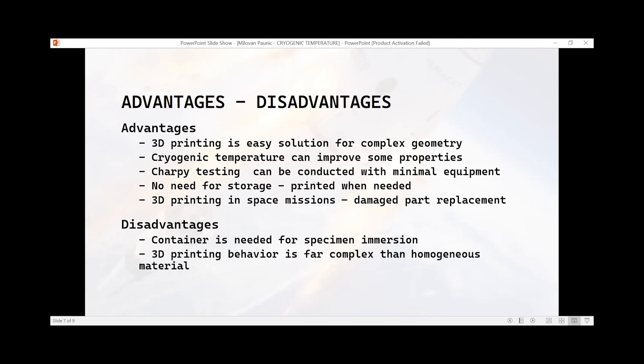3D printing behavior is far more complex than homogeneous material like metal. Filament and 3D printer manufacturer can have impact on results, because small imperfections can drastically change results. And at cryogenic temperature, the sensors can change their readings, so we must recalibrate them.